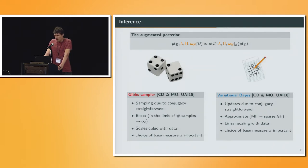This gives us a variational Bayes algorithm where the updates are straightforward due to the conjugacy of the likelihood. It's approximate, but now it scales linear with data. Also here, the choice of base measure pi is important, as you will see in the experiments.